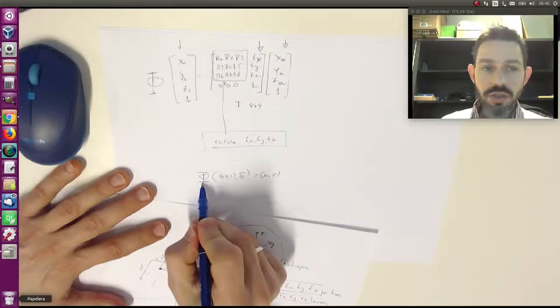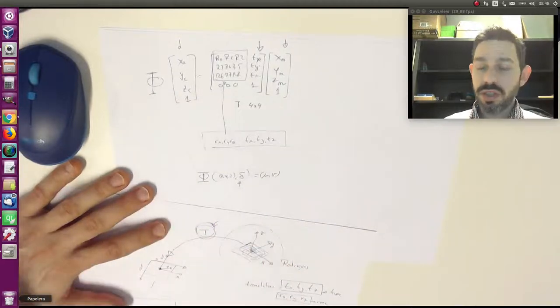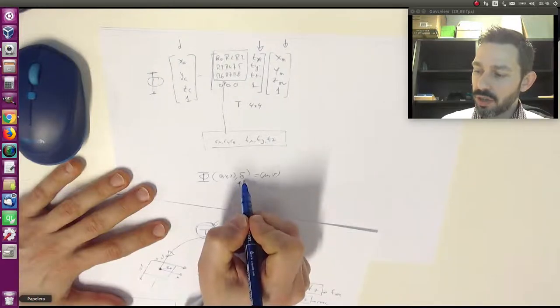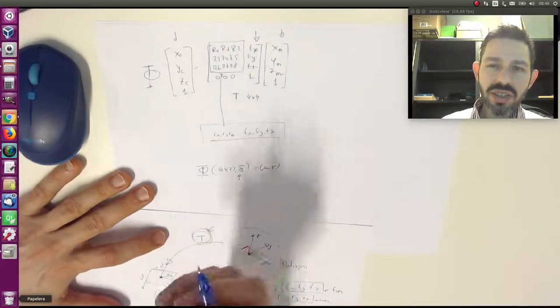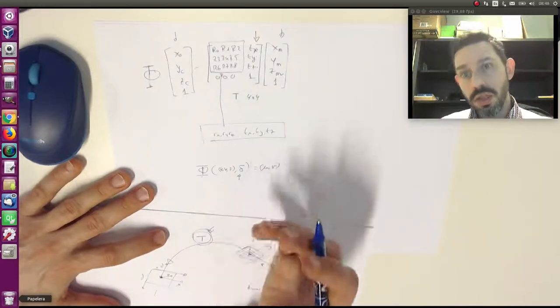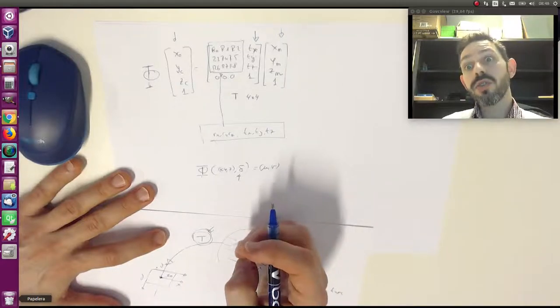But this projection function requires to know the camera parameters. These are called the camera parameters. The camera parameters are basically the intrinsic parameters, which are the focal length of your camera, the optical center, and the distortion coefficients.